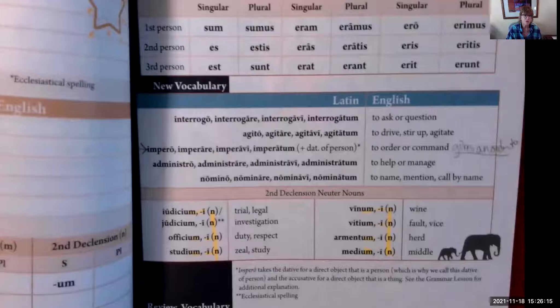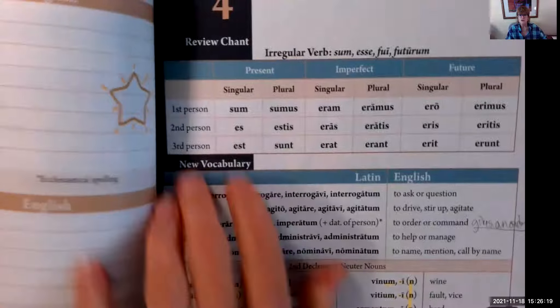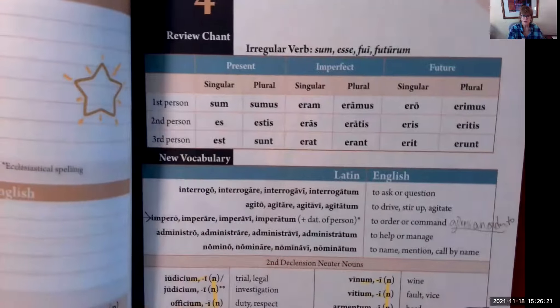Latin Primer B, Chapter 4. We're going to keep moving and take a look at the vocabulary, which is the chant here, the irregular verb up here: